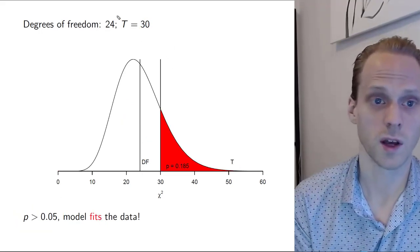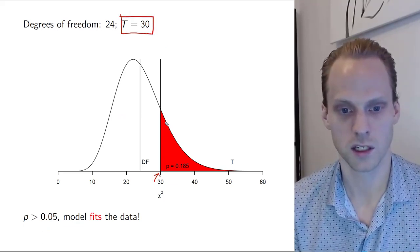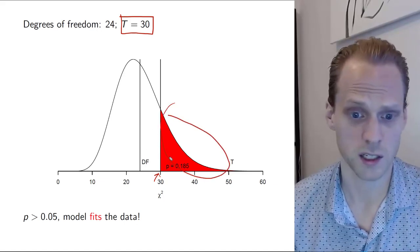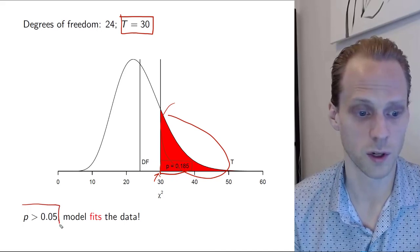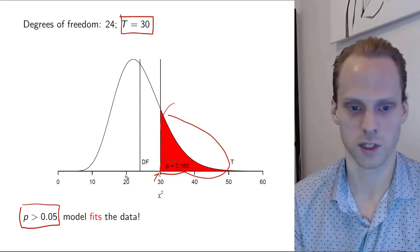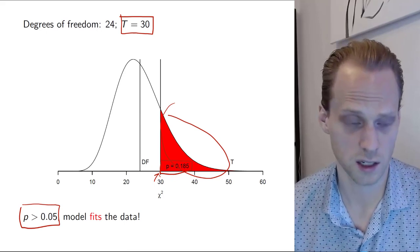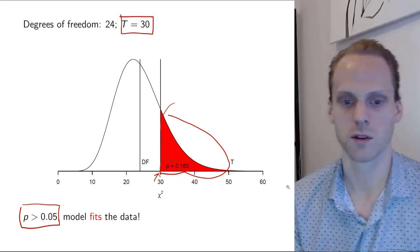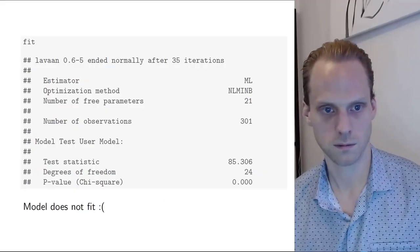Here I have another hypothetical example where I have a test statistic of 30. Now the test statistic is here, so we have a larger probability mass. We get a p-value of 0.185, which is above 0.05. That's a good thing. We would not reject the hypothesis and can say the model fits. We tried to reject the hypothesis of exact fit and we couldn't. That's a good thing.